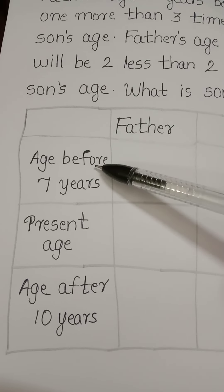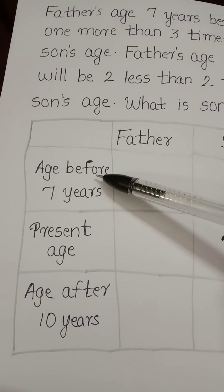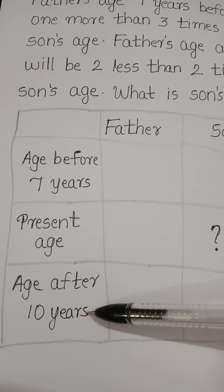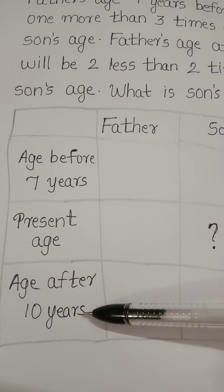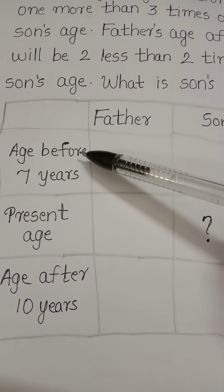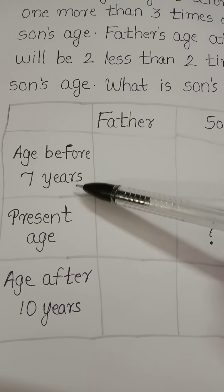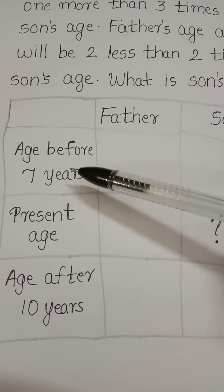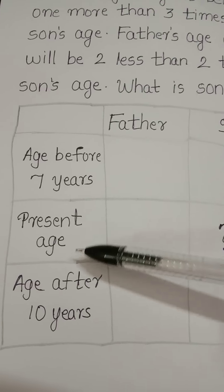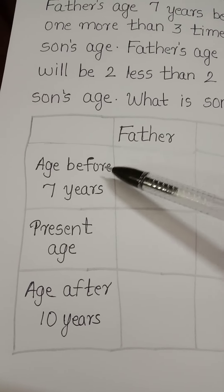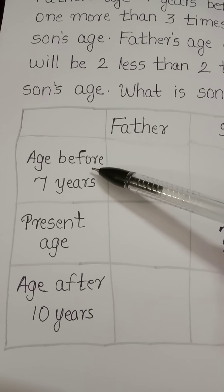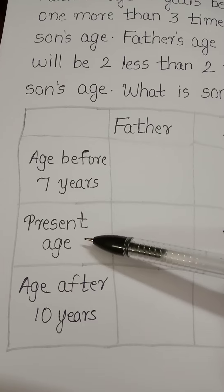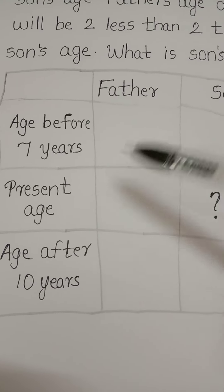Age before 7 years, present age, age after 10 years — this is the chronological order, that is the age in ascending order. At the age of 7 before, and the age after 10.